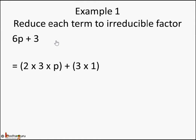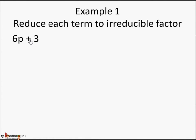So let's take an example. Let's say we are given this algebraic expression with two terms: one term is 6p and another term is 3. They are separated by a plus sign, so 6p is one term and 3 is another term. This is the algebraic expression which we need to factorize — that is, make it into a product of its factors, where each factor can be a constant, a variable, or a term itself.